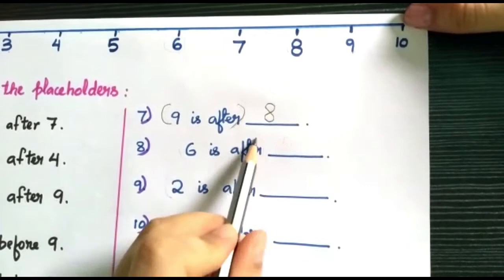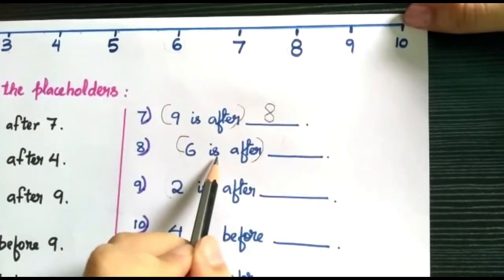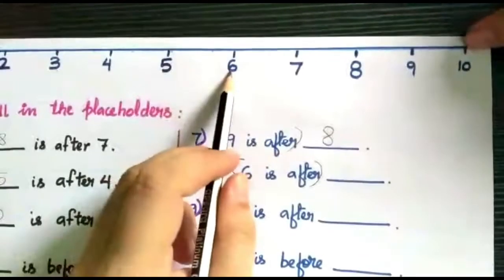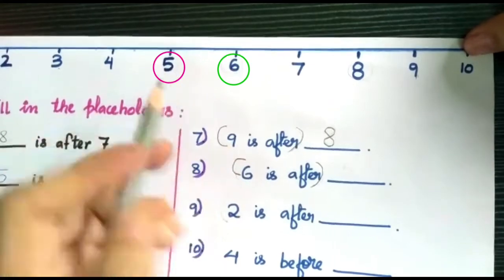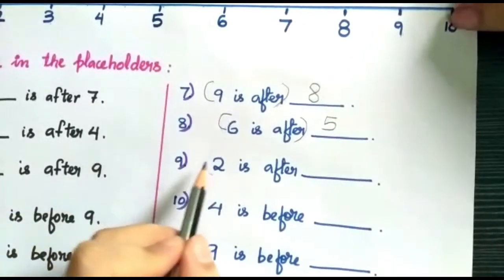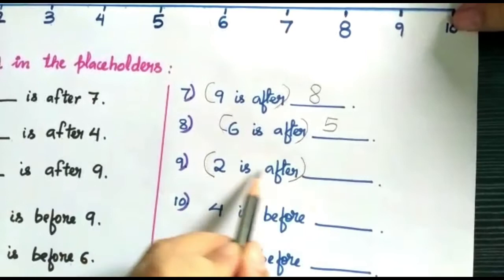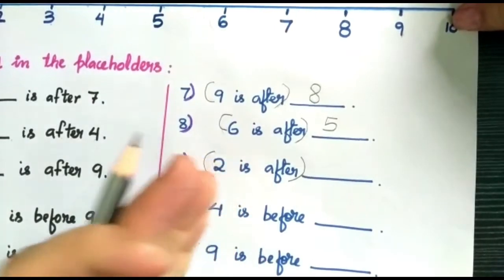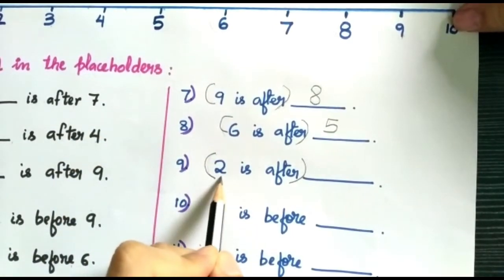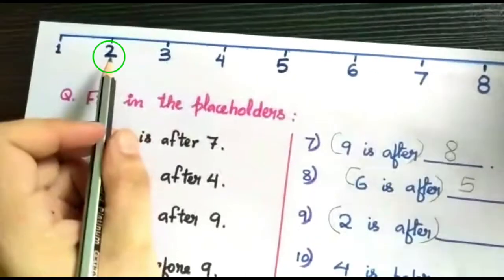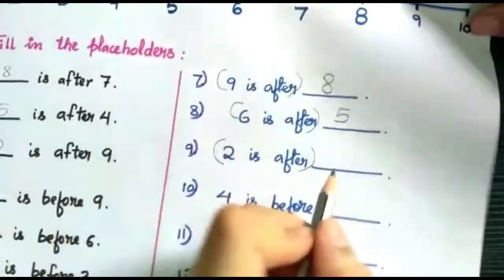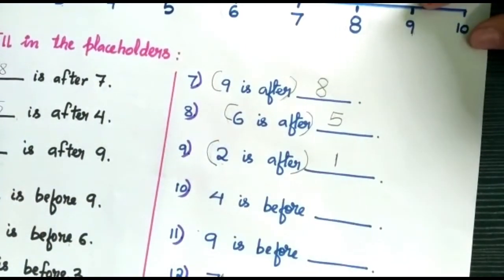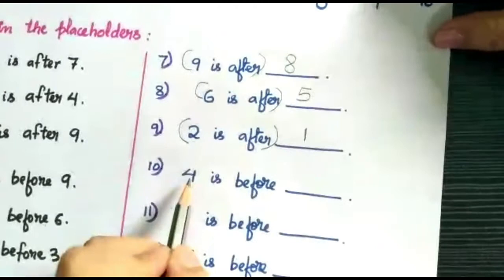Now let's go to question eight: six is after dash. Six is after — matlab six jo hai aage hai, it is already the after number. So what will be the before number? Before number will be five. Now number nine: two is after dash. Two is already the after number, so before will be number one. We'll write here number one.